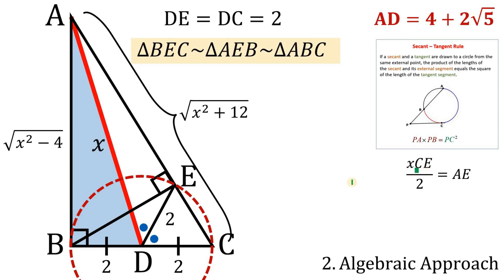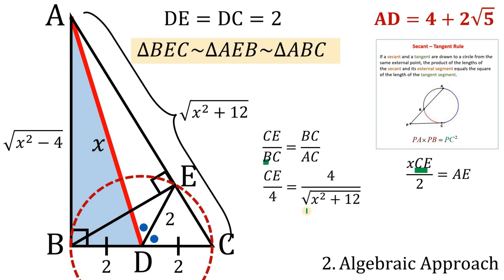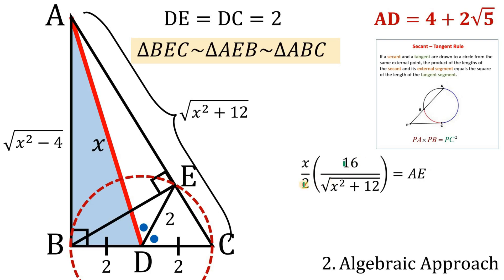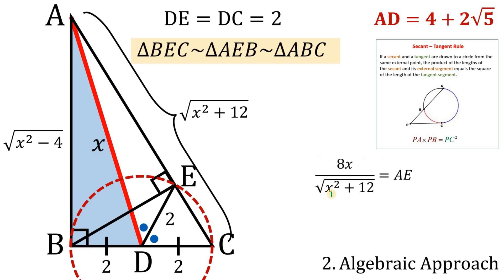To find CE, we use the similarity of triangles BEC, AEB, and ABC: CE over BC equals BC over AC. With BC equals 4 and AC equals √(x²+12), this gives CE equals 16 over √(x²+12). Substituting into the expression for AE: AE equals (x/2) times (16/√(x²+12)), so AE equals 8x over √(x²+12).